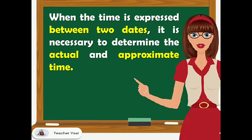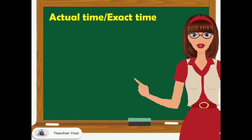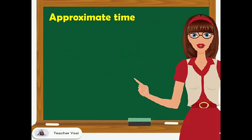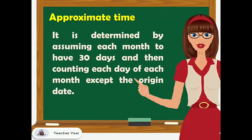When the time is expressed between two dates, it is necessary to determine the actual and approximate time. Actual time or exact time is determined by counting each day of each month of the term except the origin date, while approximate time is determined by assuming each month to have 30 days and then counting each day of each month except the origin date.